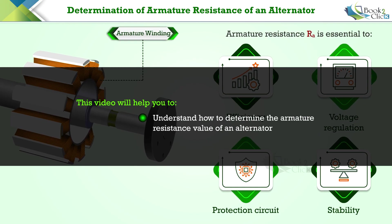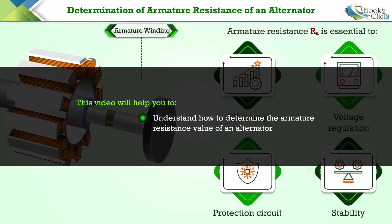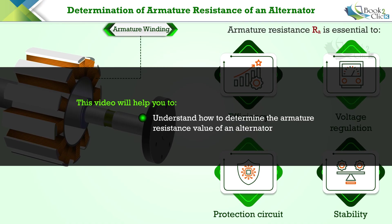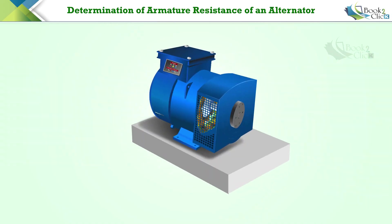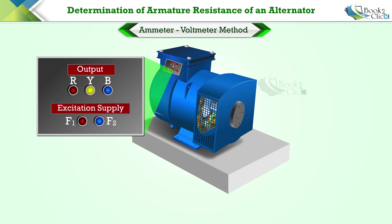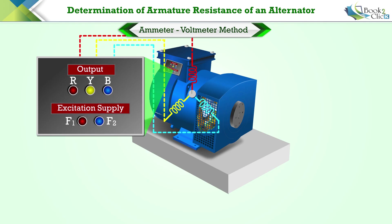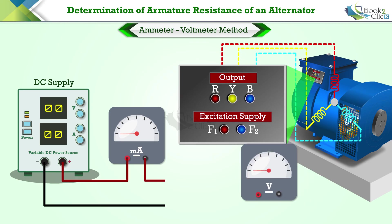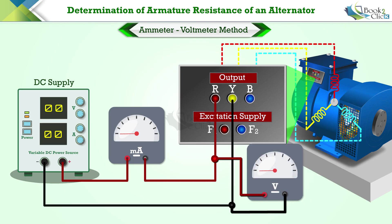This video will help you understand how to determine the armature resistance value of an alternator. We can calculate the per-phase resistance using the ammeter-voltmeter method. Consider the star-connected armature windings in this alternator, and connect a variable DC supply, a voltmeter, and an ammeter to any two phases of the alternator, as shown in the circuit.